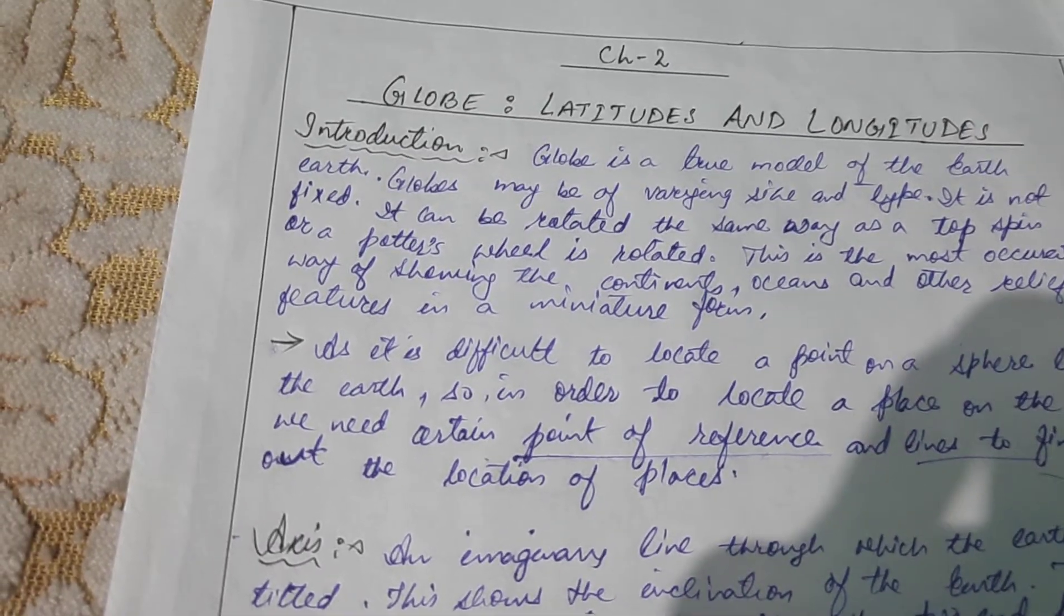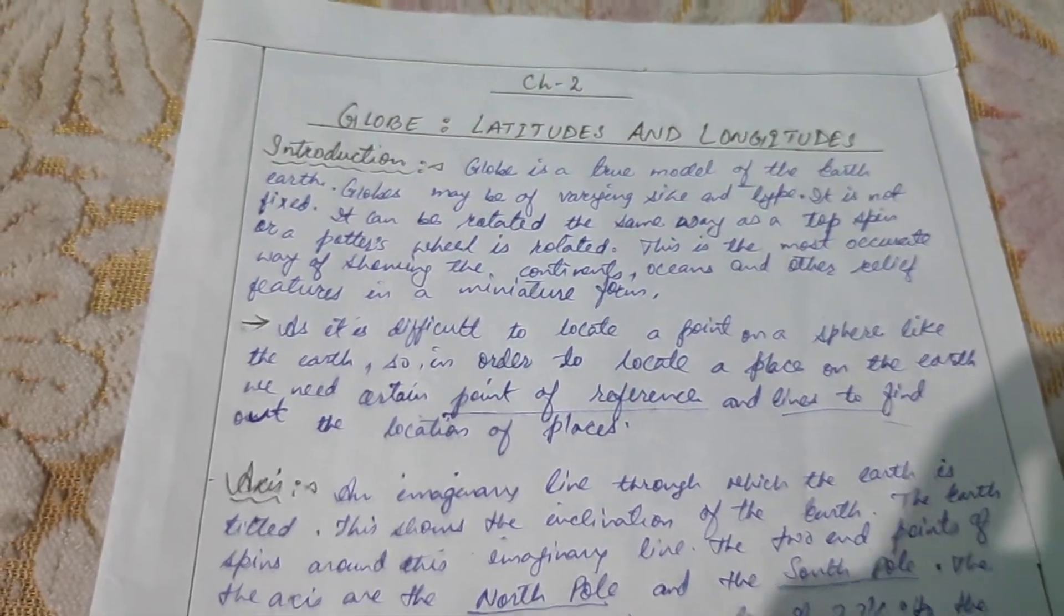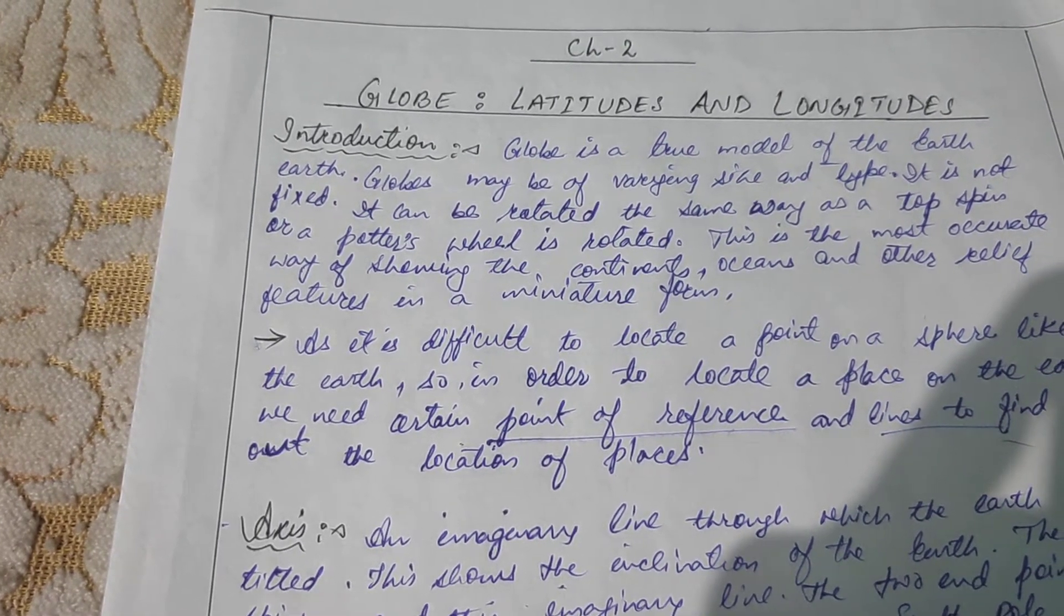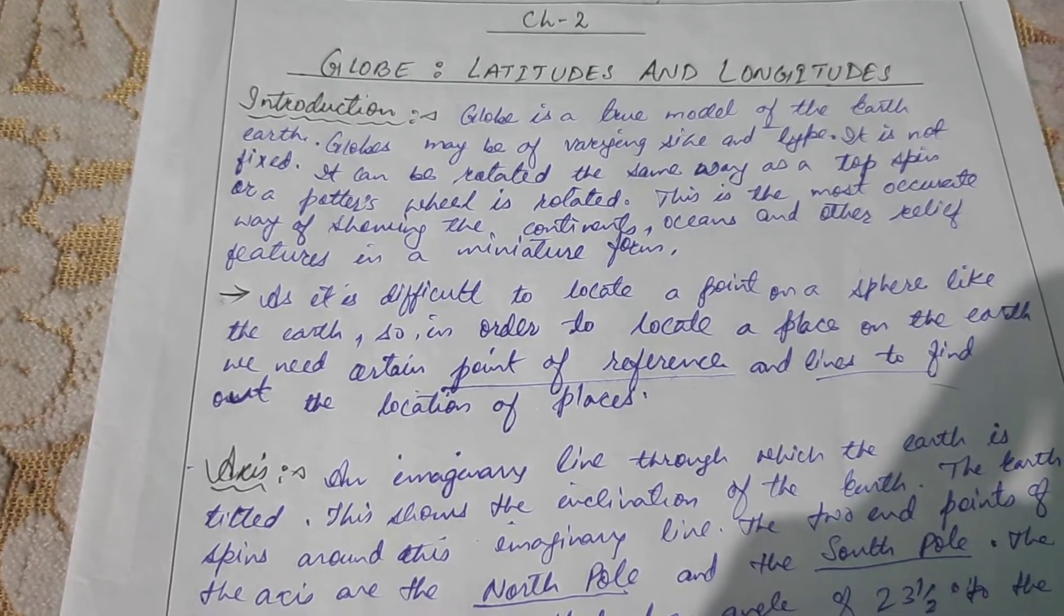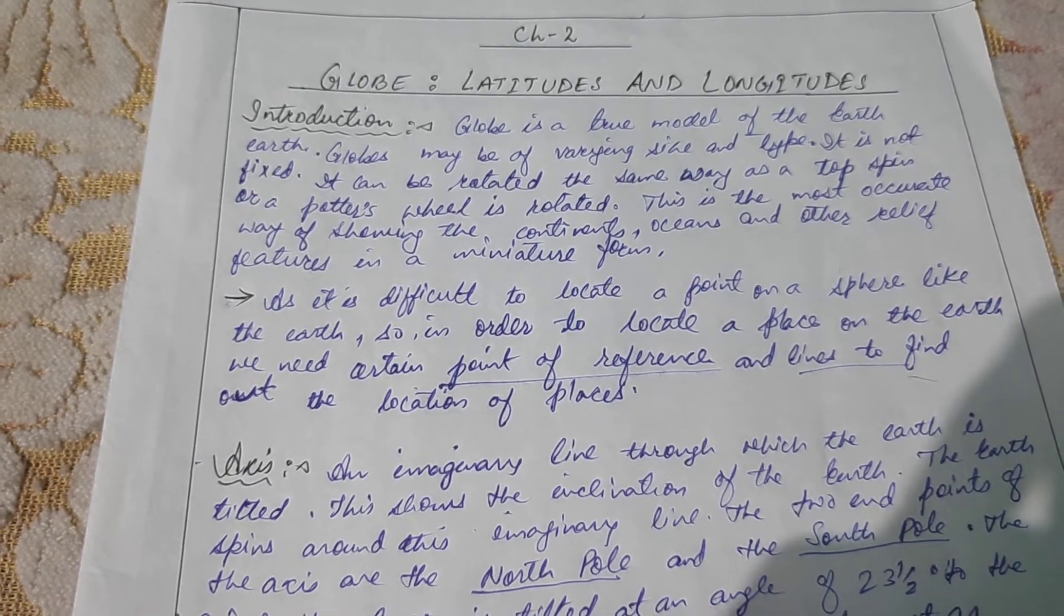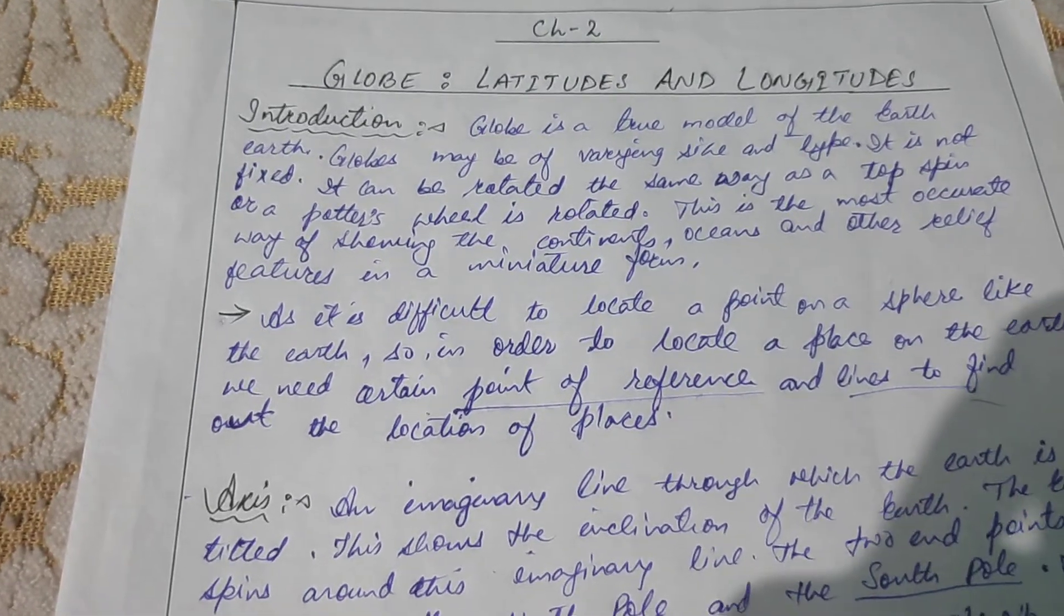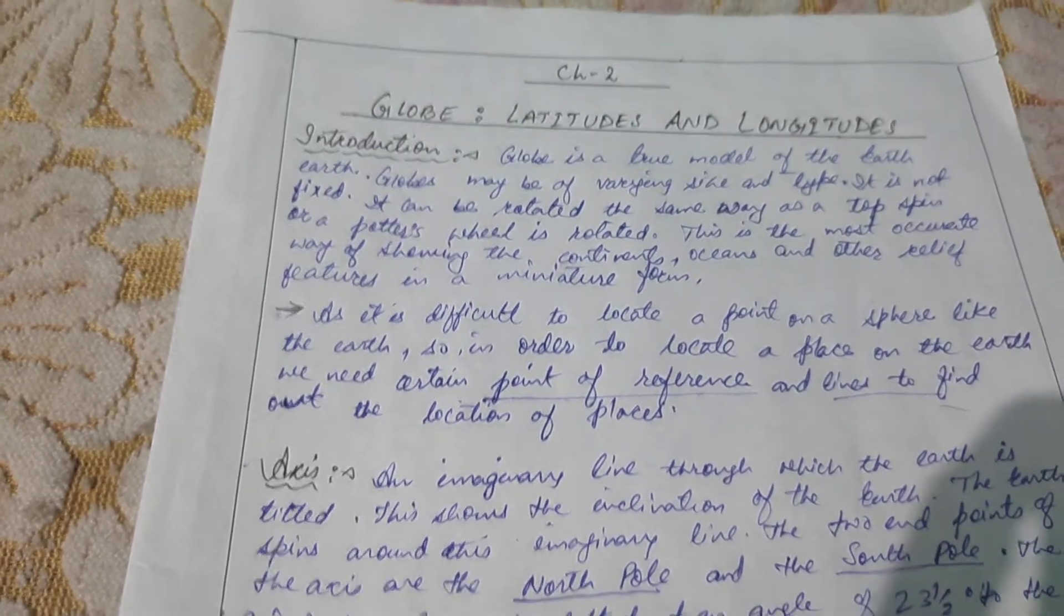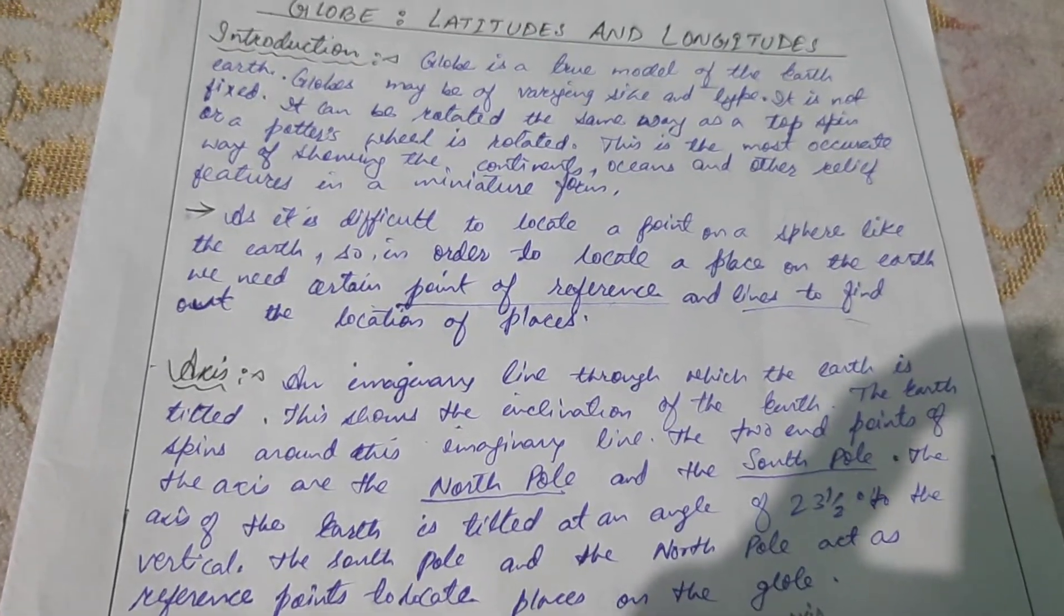In order to get the idea of the shape of the Earth, you may look at the globe. What is globe? Globe is a true model of the Earth. It may be of varying size and type. It can be rotated the same way as a top spin or a potter's wheel is rotated. This is the most accurate way of showing the continents, oceans and other relief features in miniature form.